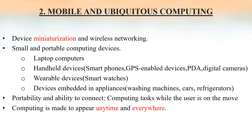The second trend in distributed computing is mobile and ubiquitous computing. Technological advances in device miniaturization and wireless networking have led increasingly to the integration of small and portable computing devices into distributed systems. These small portable devices include laptops, handheld devices such as smartphones, PDAs, digital cameras, GPS-enabled devices, wearable devices like smartwatches, and devices embedded in home appliances like washing machines and refrigerators. This kind of portability and ability to connect to each other is called mobile computing.